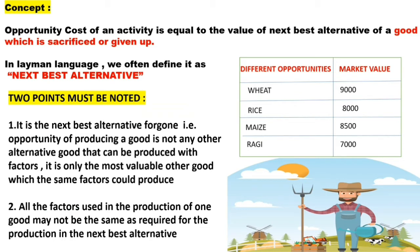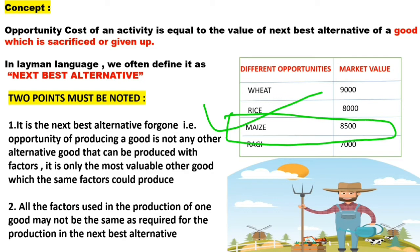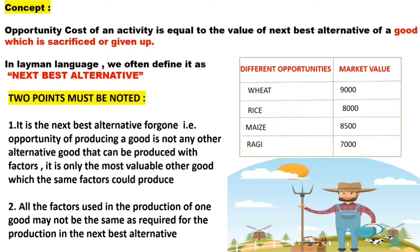So what is the opportunity cost? When he chooses to produce the best option — wheat — what is the next best alternative? In this case, after wheat, the next best alternative for the farmer is maize, because maize will fetch him 8,500 rupees. So opportunity cost is nothing but the next best alternative. I hope the concept is clear till now.